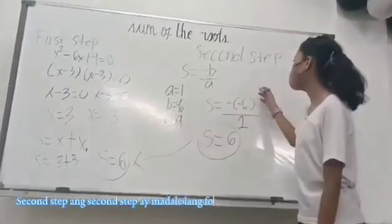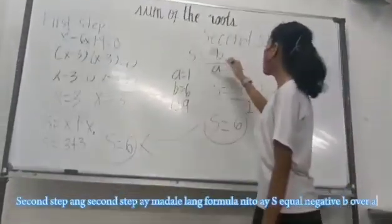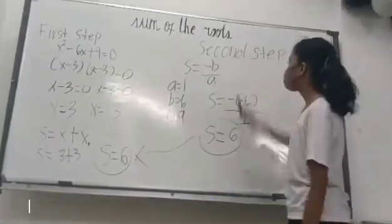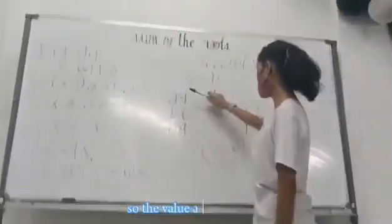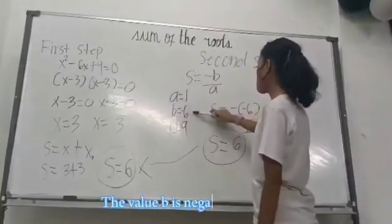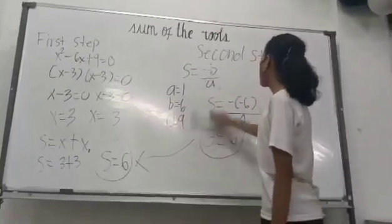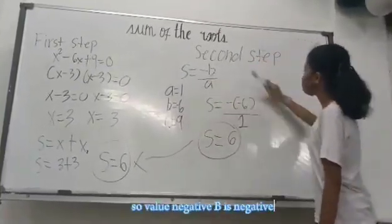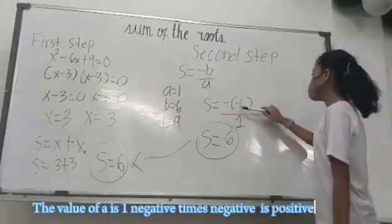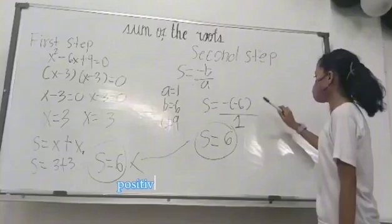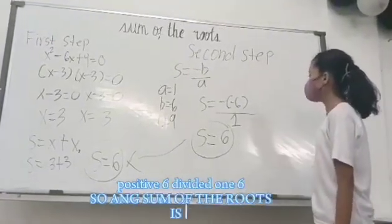Second step is easy. The formula is negative B over A. First step here is we'll find A, B, and C. The value of A is 1, the value of B is negative 6, the value of C is 9. So the value of negative B is negative of negative 6, negative times negative is positive. Positive 6 divided by 1 is 6. So the sum of the roots is 6.